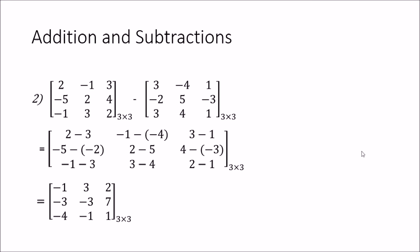In the second example we subtract two 3 by 3 matrices. We look at each location and subtract. The (1,1) element: 2 minus 3 equals −1. The (1,2) element: −1 minus (−4) becomes +4, giving 3. The (1,3) element: 3 minus 1 equals 2. You continue deducting each element according to its location to get the resultant matrix.